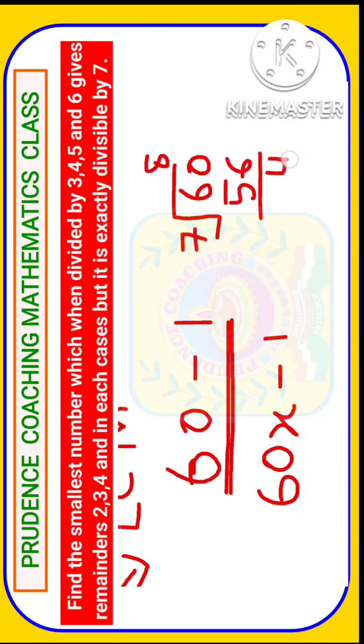So the remainder you are getting here is 4. That means from 60 if we deduct 4, then that number, that is 60 minus 4 equals 56, is completely divisible by 7.